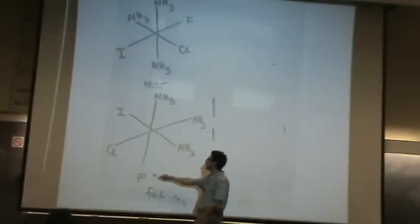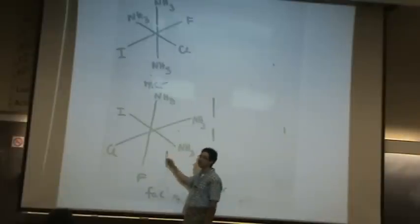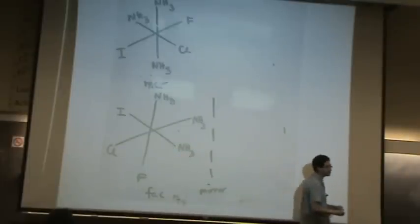Now I'm going to go to the optical isomers, which is the mirror image thing, and that will be true for the fac. It's not always true, but often if you have three that are in the fac position and the other three ligands are all different and different than the original three, its mirror image will be non-superimposable. In other words, you'll have optical isomers.